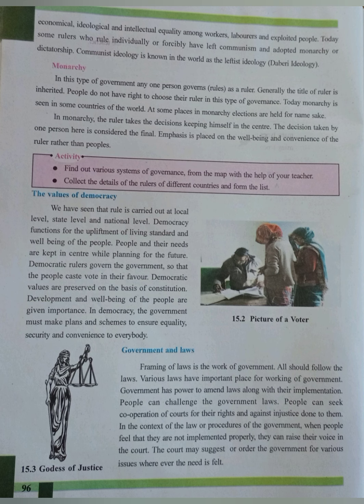The court may suggest or order the government for various issues wherever the need is felt. In a democracy, the government formed from elected representatives annexes the necessary laws for the welfare of the people according to public opinion. If public opinion changes in a democracy, then the laws enacted and implemented by the government have to be changed. If the laws framed by the government are not implemented properly and injustice is done, complaints can be made before the court, and the court may order the government to enforce the law properly.